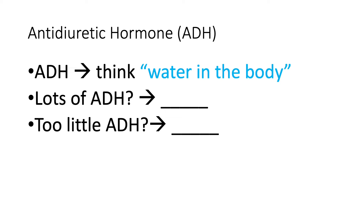This will help you later when you see abnormalities with ADH. If we have lots of ADH — lots of water in the body — where is the water not? It's not in the urine. And the same thing goes for too little ADH: too little water in the body means the water went into the urine. There's this inverse relationship with ADH: if there's water in the body, it's not in the urine, and vice versa.